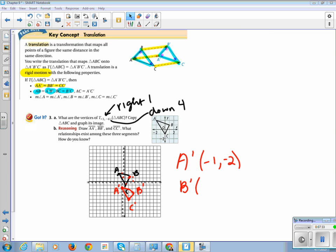So B prime is at over 1, down 4. So B prime is at over 1, 2, comma, negative 3. And C prime is at 1, negative 5.